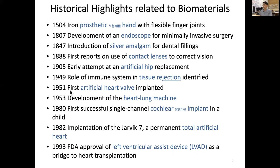In 1951, the first artificial heart valve was implanted — a major milestone, since heart valve failure can be very fatal. In 1953, a heart-lung machine was developed for use during heart transplantation, when both heart and lung function need to be replaced.